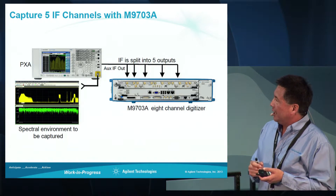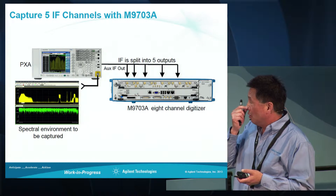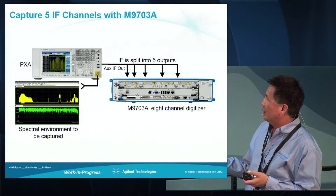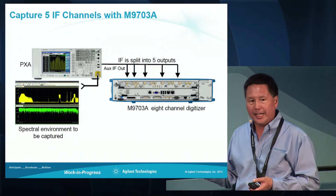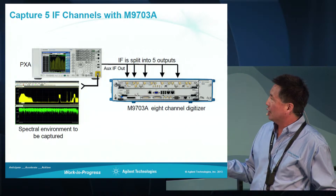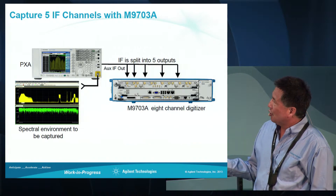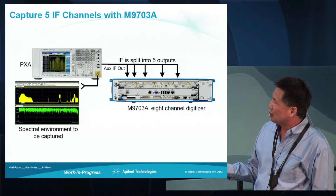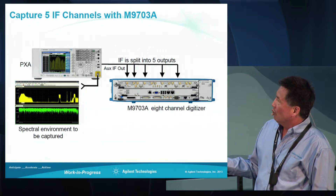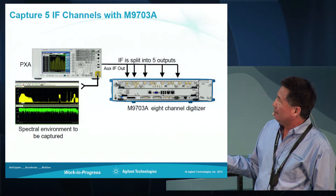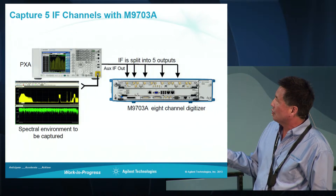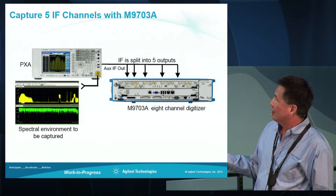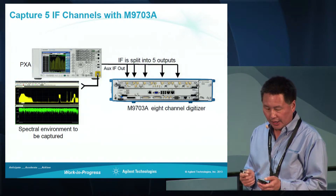That was one case study. The next one highlights the multi-channel nature of this digitizer. The digitizer is actually an eight-channel phase coherent digitizer. To show a multi-channel capture, we're going to generate a signal, down convert it with the PXA to an IF, and at the IF output use a splitter to split it into five different signals, which are run into five different input channels on the digitizer.